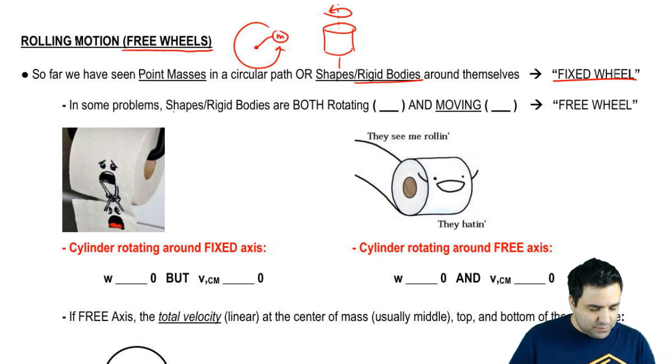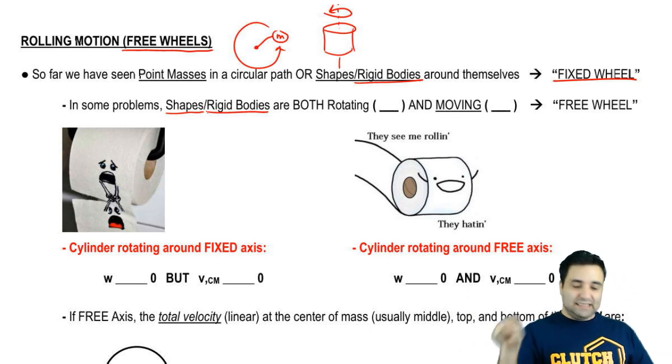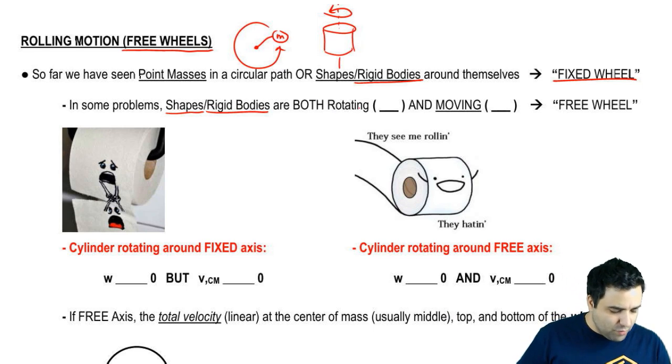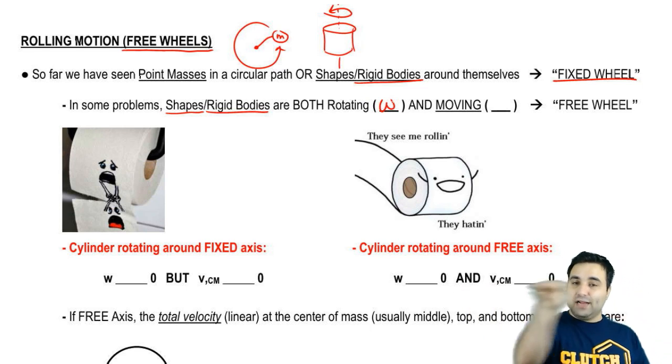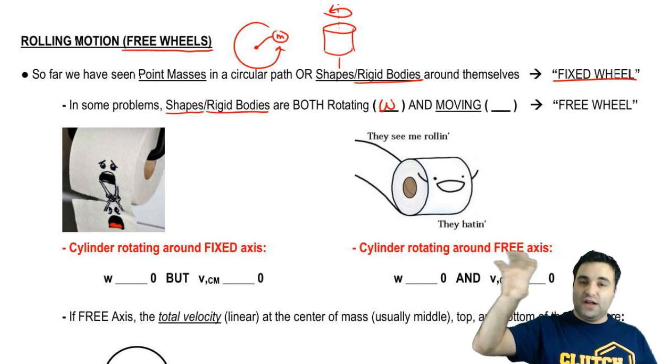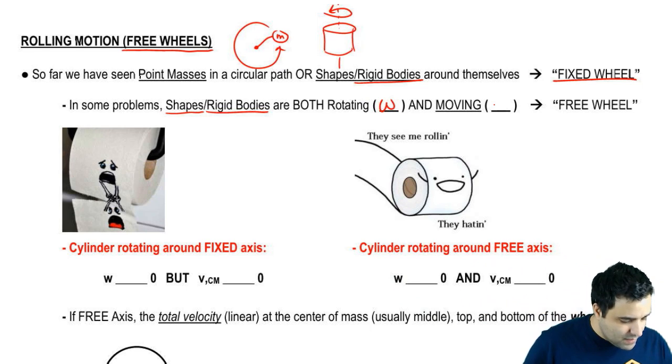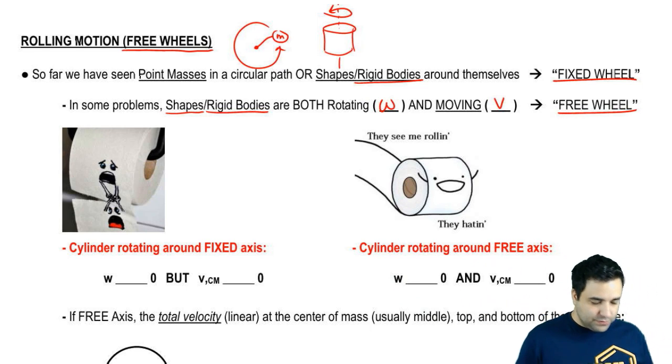Now, in some problems, we're going to have these rigid bodies or these shapes that are going to not only be rotating around themselves, but they're also going to be moving sideways. So they're both rotating, so they have an omega because they're spinning, and they're moving. And when I say moving, I mean they're actually moving sideways. They're not fixed in the same place. We're going to think of these as free wheels. And that's why I call this free wheel.